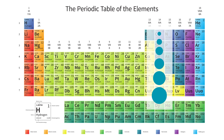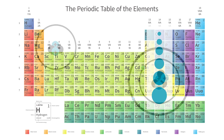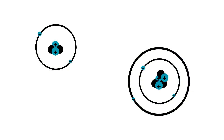The opposite thing happens when moving down in groups. Although more protons are added, more electron shells also form. This expanding electron cloud outweighs the charge of the nucleus, allowing atoms to swell in size.